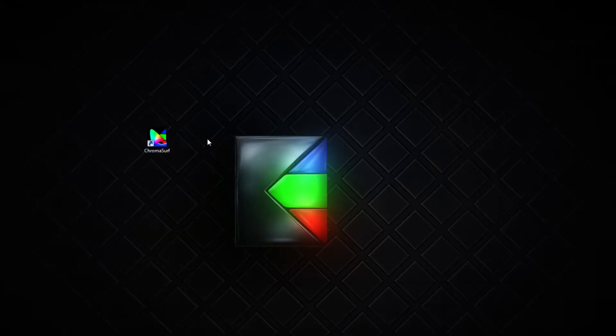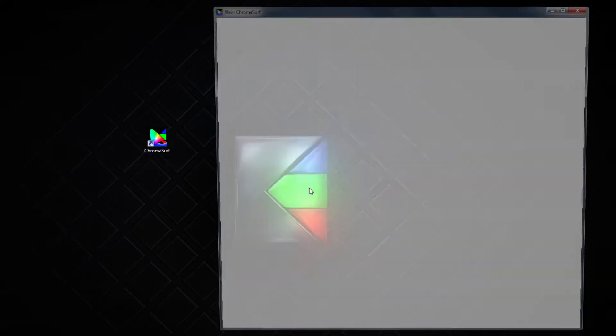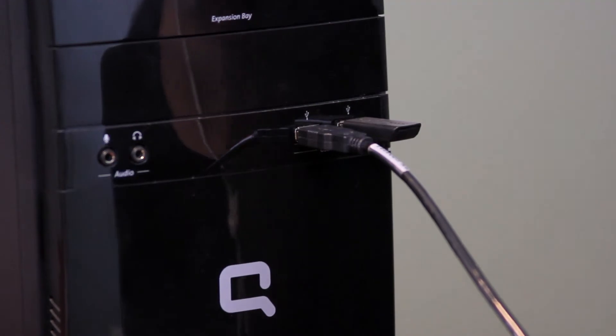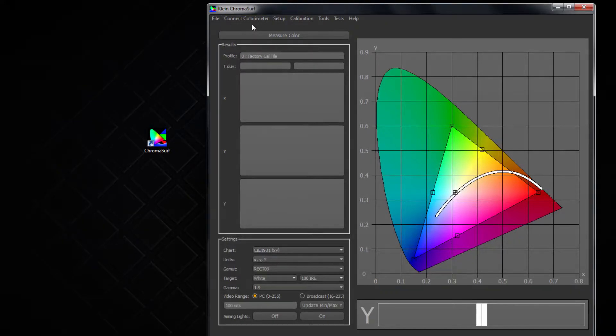After Chromosurf is installed, there should be an icon on the desktop. Double-click it to start Chromosurf. Let's plug our colorimeter into any available USB slot on your computer. Now we can rescan devices and select our unit from the drop-down menu.